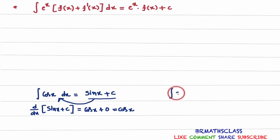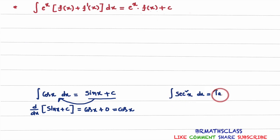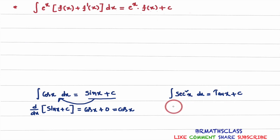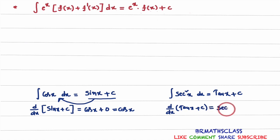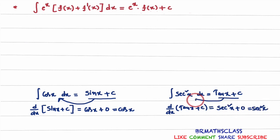Similarly, consider one more formula: the integral of sec²x dx. This formula we also learn in integration. The integral of sec²x dx is tan x plus c. Why do we get this formula? Because the derivative of tan x plus c is sec²x. The derivative of tan x plus c equals the derivative of tan x plus the derivative of the constant. The derivative of tan x is sec²x, plus the derivative of a constant is 0. Sec²x plus 0 is sec²x. That's why we say the integral of sec²x dx is tan x plus c.